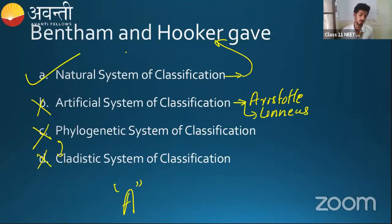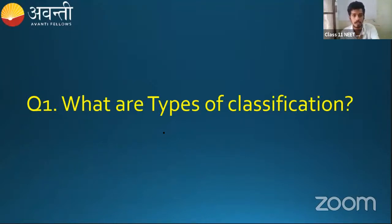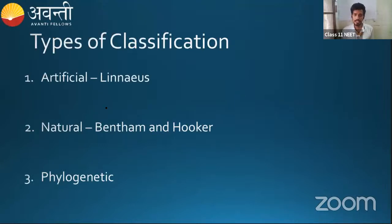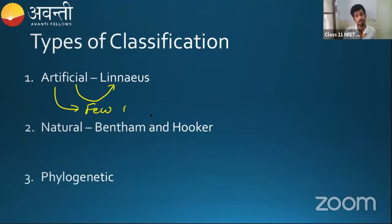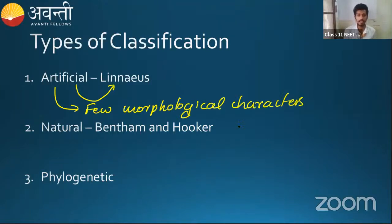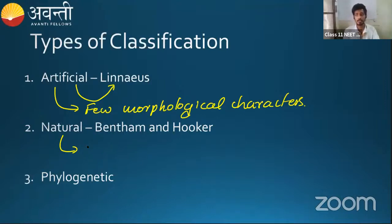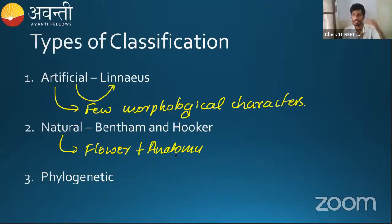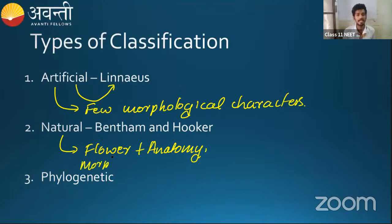Next question: what are the types of classification? There are three types. Artificial, given by Linnaeus — it only considers a few morphological characters such as color of the flower or type of the plant, not all characters. Because it's not perfect, others like Bentham and Hooker gave the natural system, which deals with more than one character — morphology, flower characters, anatomy. Related individuals are grouped together.